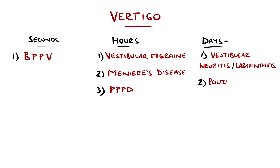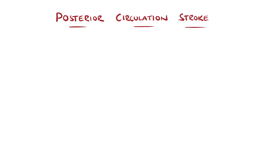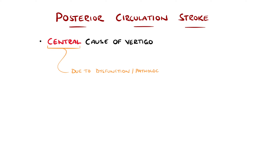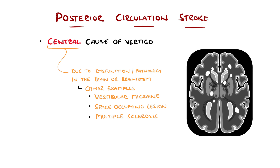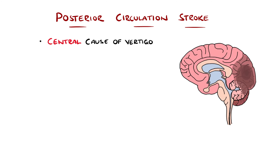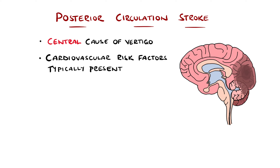A key differential of vertigo is a posterior circulation stroke, which can be subtle and easily missed. It is a central cause of vertigo, meaning the source is the brainstem or brain, whereas other causes of vertigo are peripheral, meaning they come from dysfunction in the vestibular apparatus itself. Other examples of central causes are vestibular migraine, space-occupying lesions like tumors, and multiple sclerosis. Generally, stroke is more common in those with risk factors for cardiovascular disease like older age, smokers, diabetes, obesity, and dyslipidemia.